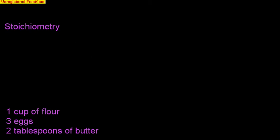In this video we're going to take a look at something in chemistry called stoichiometry. Stoichiometry is just a fancy word that basically means that we're taking molar ratios in a balanced chemical equation to find out how many moles of product we're going to make, how many grams of product we're going to make.